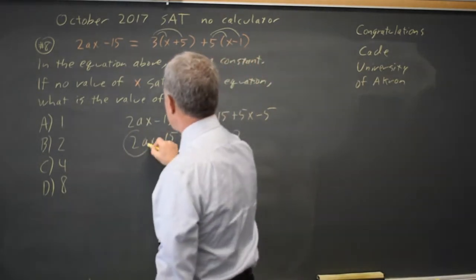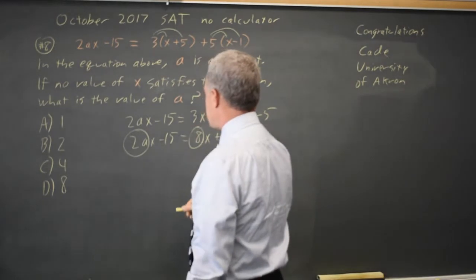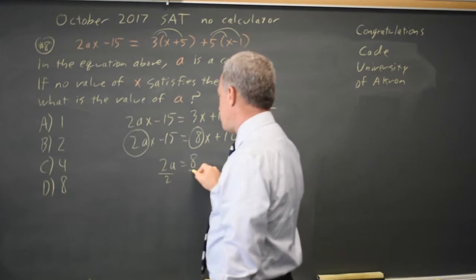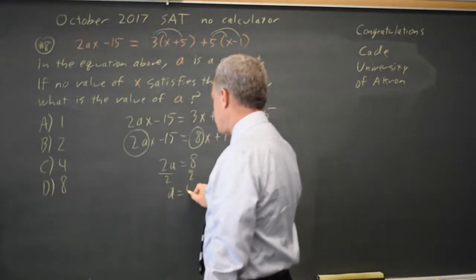The slope on the left is 2a. The slope on the right is 8. 2a equals 8 if they are parallel. Dividing by 2 gives me a equals 4.